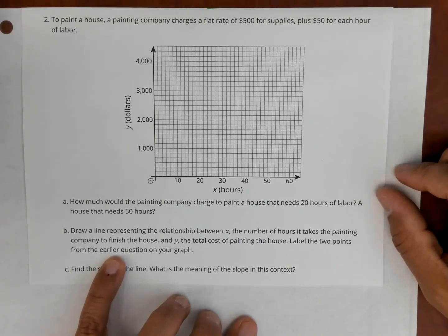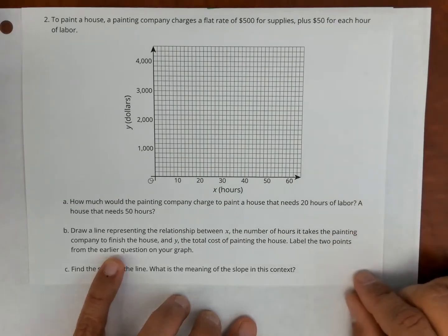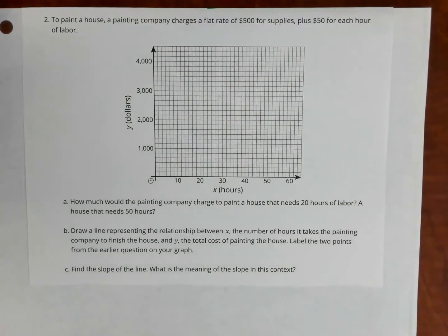Part B, draw a line representing the relationship between X, the number of hours it takes the painting company to finish a house, and Y, the total cost of painting the house. Label the two points from the earlier question on your graph. And then Part C, find the slope of the line. What is the meaning of the slope in this context?